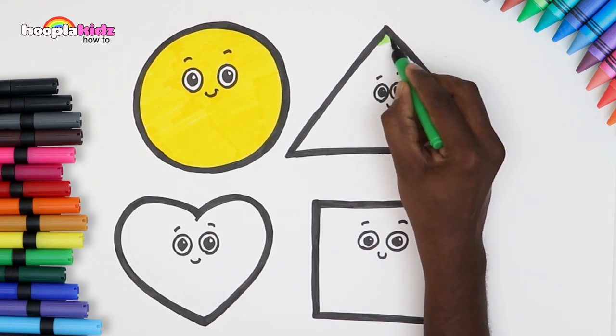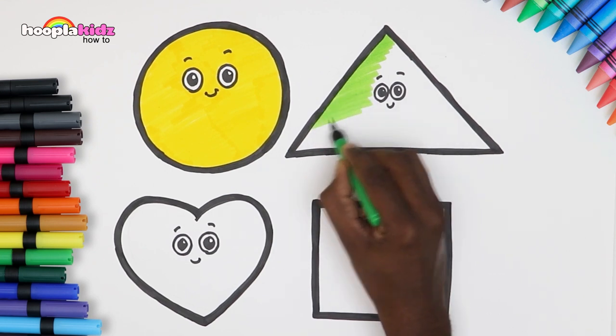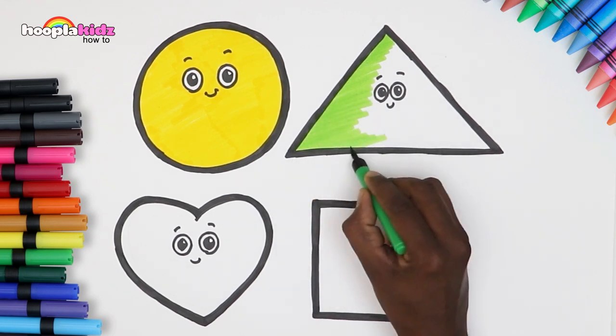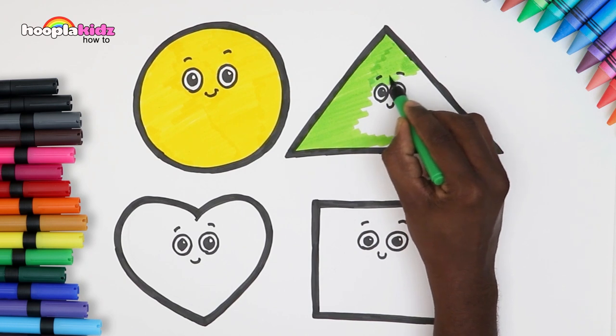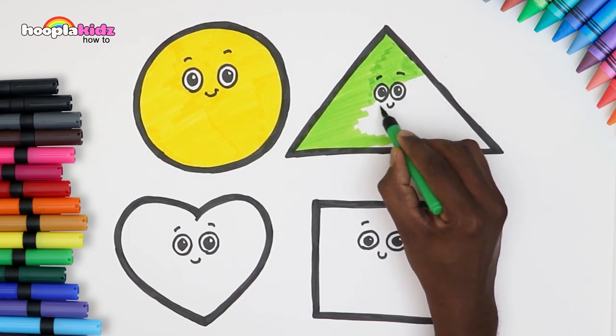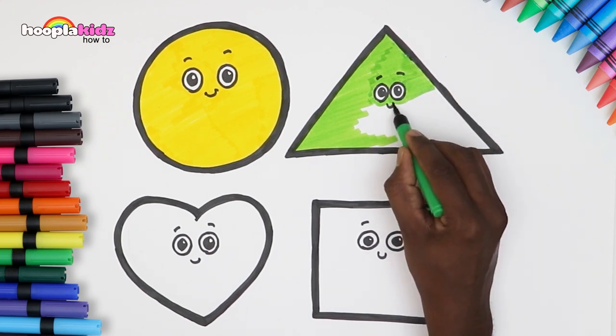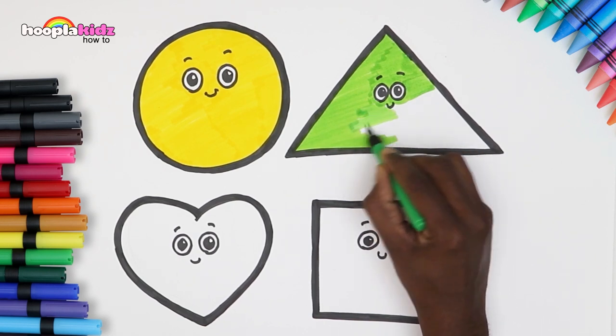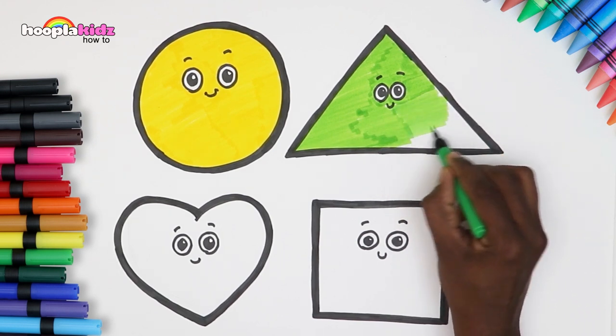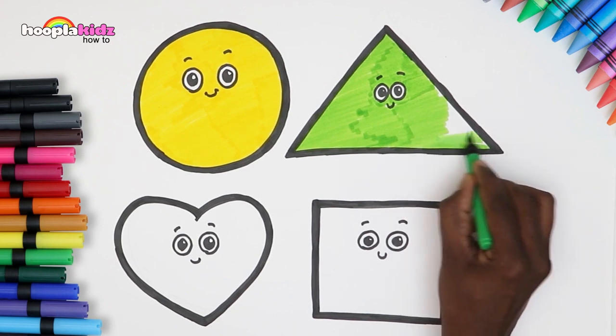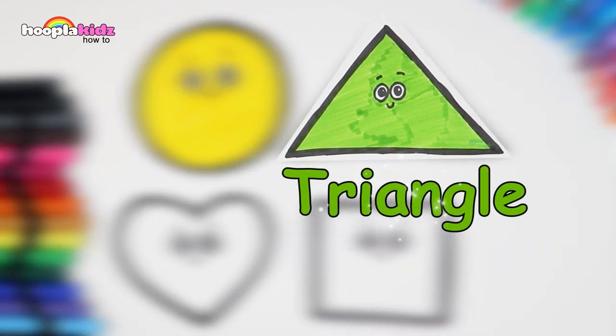Let's move on to our triangle. A light green color. Let's stay within the lines. Nice and neat. And here we have it. A triangle. Yay!